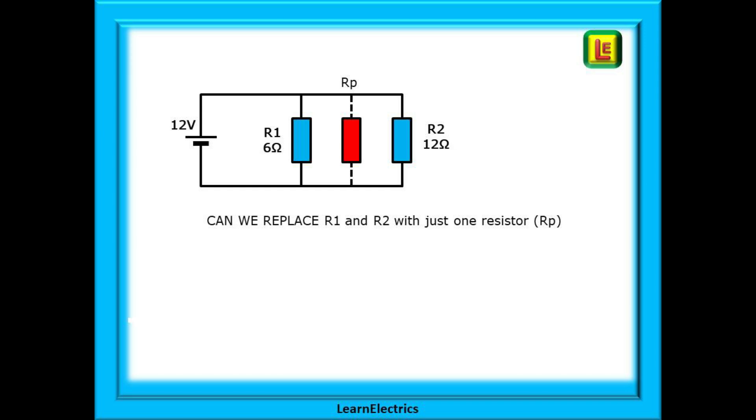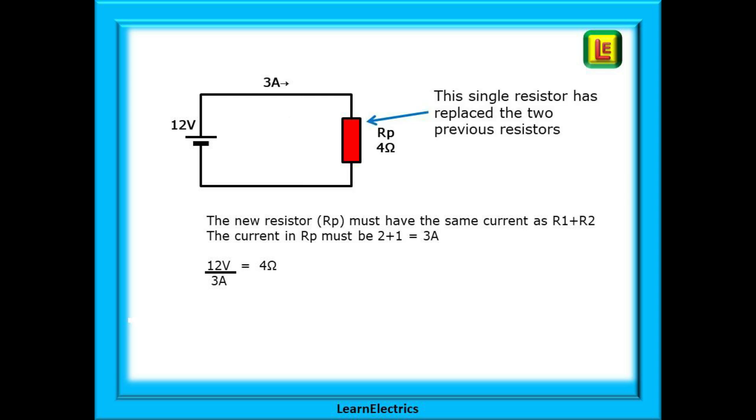Another way to imagine this is to ask the question: what single resistor could replace both R1 and R2? The new resistor, which we will call RP for parallel resistance, must allow 3 amps to flow, the same as R1 and R2 combined. Simple Ohm's law tells us that 12 volts divided by 3 amps is 4 ohms of resistance. This single resistor RP should be 4 ohms.